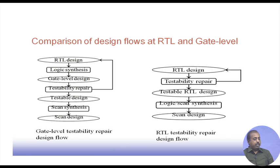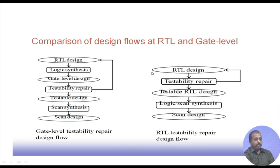In the gate-level testability repair design flow, the RTL design goes through logic synthesis to produce the gate-level design. Testability repairs are performed — all scan rules are applied — and once all rules are satisfied we get a testable design. Logic scan synthesis then inserts scan chains to produce the scan design. At the RTL level, testability repair is done first on the RTL design — checking feedback loops, gated clocks, etc. — to get a testable RTL design, which then goes through logic and scan synthesis to produce the scan design.